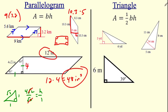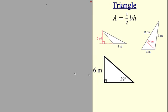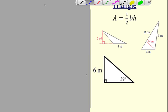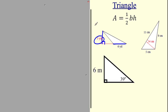Now let's do some triangles. Triangles are half of a parallelogram, so the formula is one-half base times height. The height is the side that forms the right angle with the base. So the first one is one-half times 5 times 6. The next one — the height forms the right angle with the base — so it's one-half times 11 times 4.